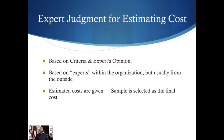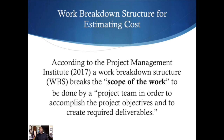The second method is expert judgment for estimating costs, which is based on criteria and expert opinion. Many different experts give their estimate of what the project costs would be — often from outside the organization. After all estimated costs are given, a sample is selected for the final cost. The third method is the work breakdown structure. According to the Project Management Institute, the WBS breaks down the scope of work so that the project team can accomplish objectives and create the required deliverables. The WBS breaks work into work packages, each with associated costs, and when those work packages are summarized, you have a cost for the program.